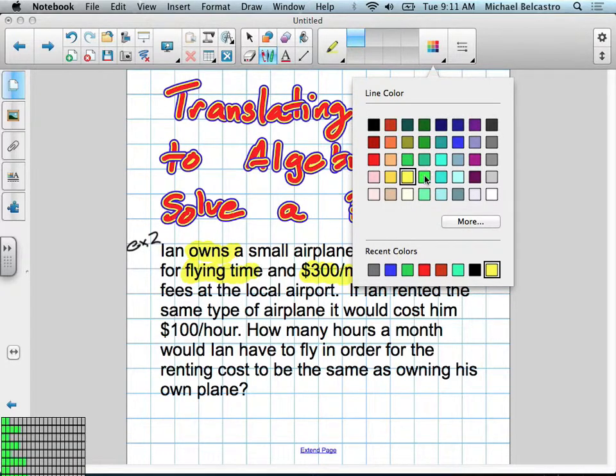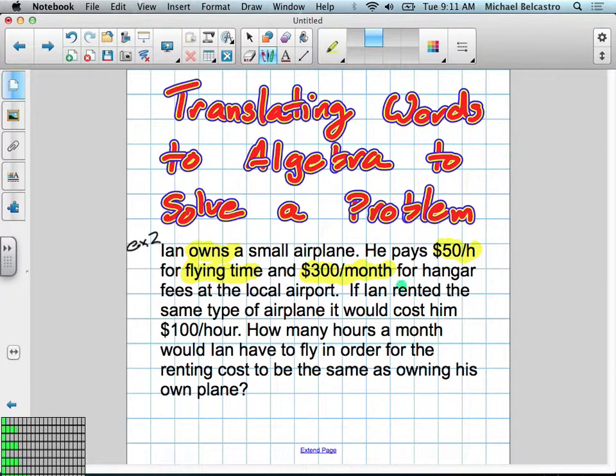And let's try green. If Ian rented, so these are the costs for renting. The same type of airplane, it would cost him $100 an hour. No fixed fee.